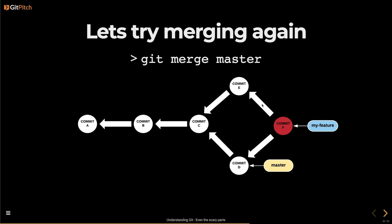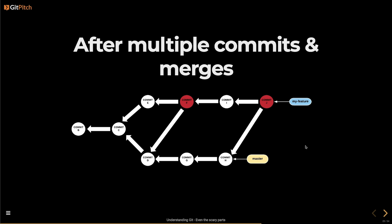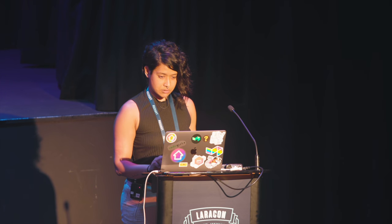This is the merge commit I was talking about earlier — the red one has two parents. If you keep doing that, as the productive person on your team keeps pushing commits and you keep working off your branch, that stitching pattern will keep happening, which can get tedious.